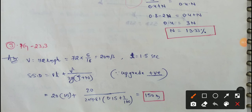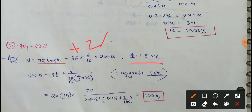A car is moving at a speed of 72 km per hour on a road having a 2% upward gradient. Upward means positive. The reaction time of the driver is 1.5 seconds, and the coefficient of friction F is equal to 0.15. We need to calculate the distance moved by the vehicle before the car stops finally.